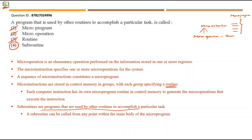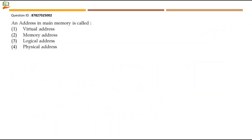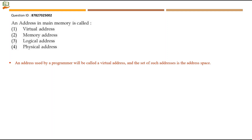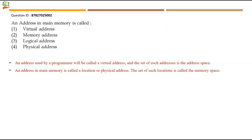Next question: an address in main memory is called what? An address used by a programmer is called a virtual address, and the set of such addresses is the address space. An address in main memory is called a physical address, and the set of such locations is called the memory space. So address space refers to virtual addresses and memory space refers to physical addresses. Option 4, physical address, is the right answer.